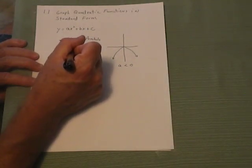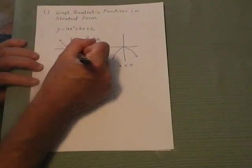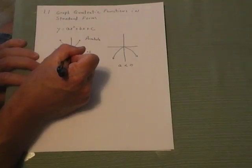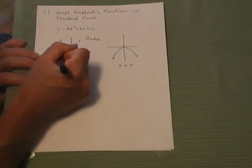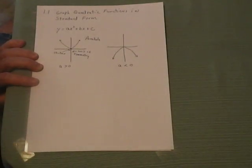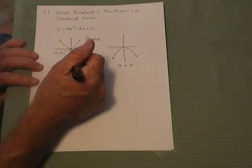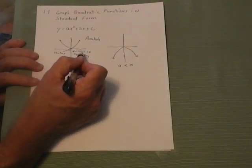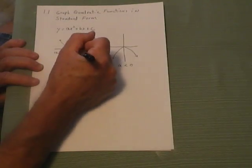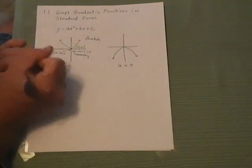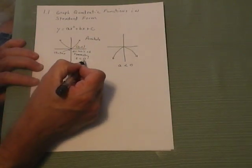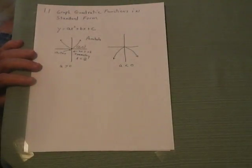An imaginary line that cuts the parabola in half is called the axis of symmetry. The point where the parabola changes direction is called the vertex. The x-coordinate of the vertex and the equation of the axis of symmetry have the same value. For instance, here the vertex is at (0, 0) and the axis of symmetry is x equals 0.